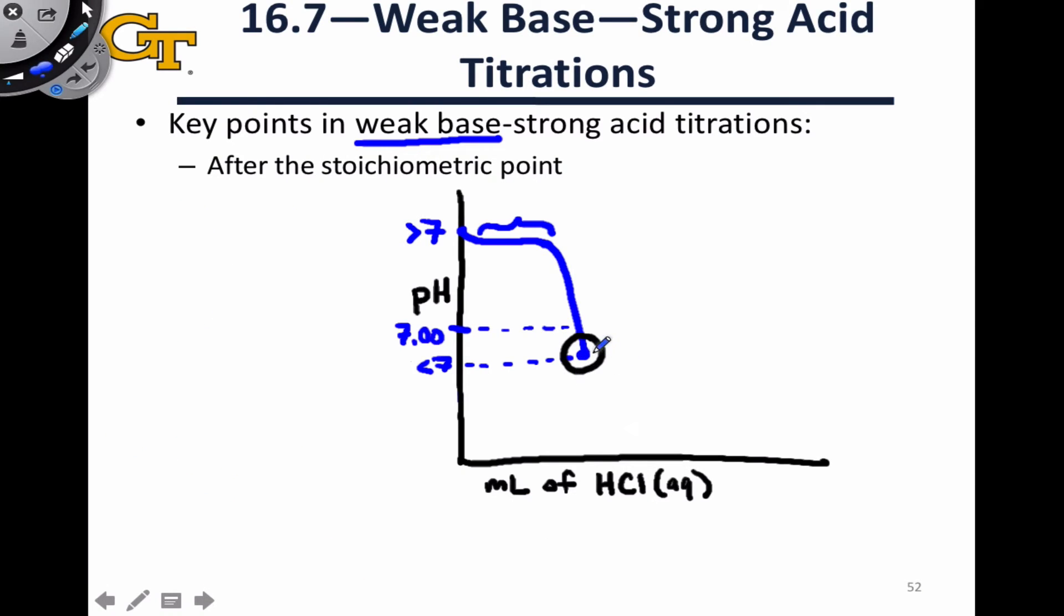After the stoichiometric point, the pH of the analyte-titrant solution continues to decrease and eventually levels off. The leveling off occurs for the same reason it occurs in the weak acid-strong base titration. We're limited to a minimum pH equal to the pH of the titrant. We can't increase the concentration of hydronium beyond whatever its concentration is in the titrant itself.